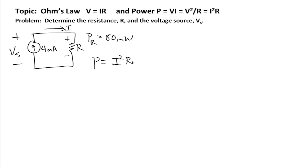We're also given the current. The current is equal to 4 milliamps in the problem. It's on the left-hand side as a current source. So we have everything we need in order to solve for the resistance.